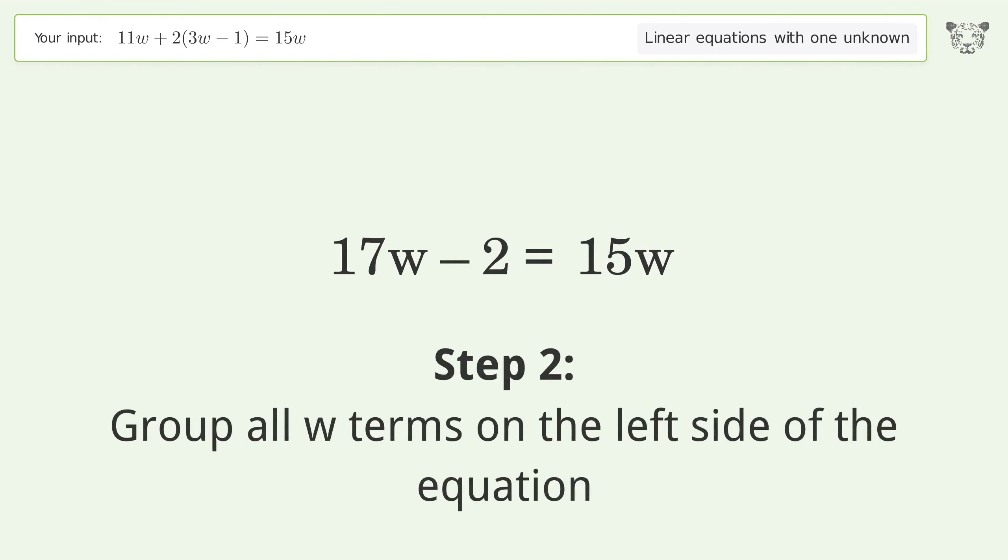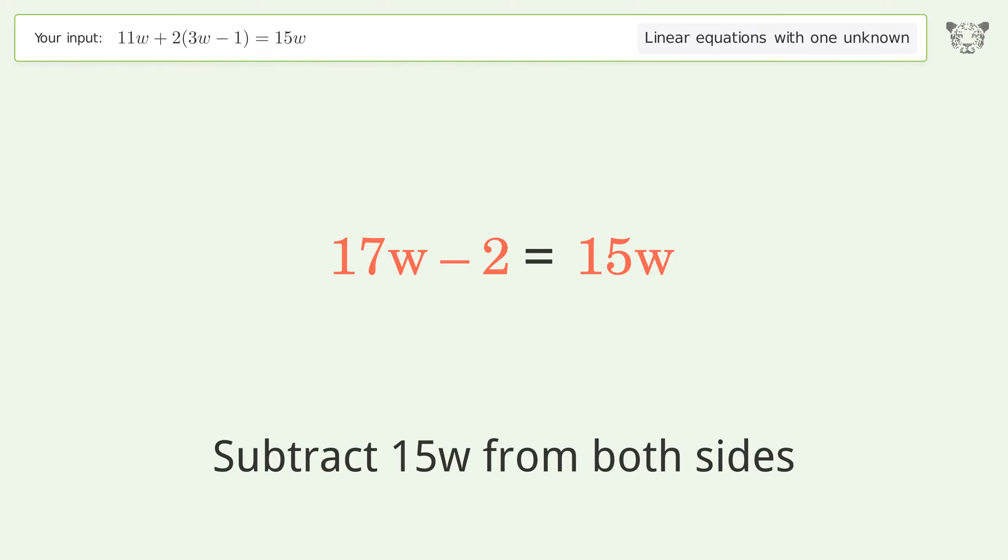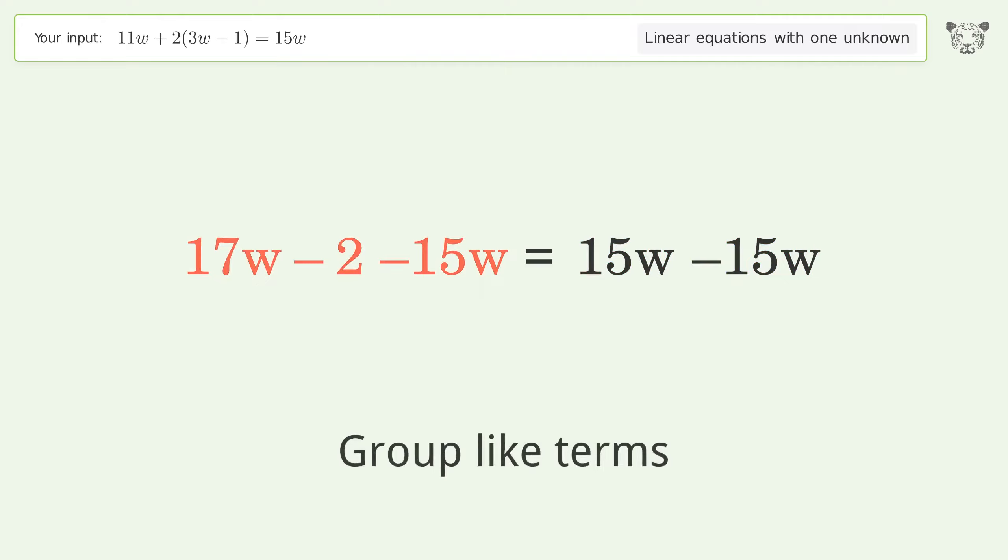Group all w terms on the left side of the equation. Subtract 15w from both sides. Group like terms. Simplify the arithmetic.